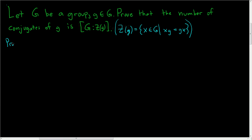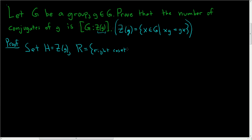Proof. We're going to have to come up with a bijection between the order of the conjugacy class of g and the right cosets. Let's define some notation to make things easier. We'll set H to be the centralizer of g. We'll let R be the set of all right cosets of H in G. And we'll let C be the conjugacy class of g.